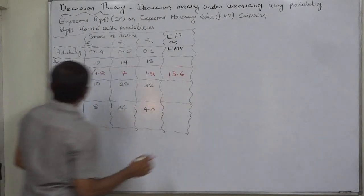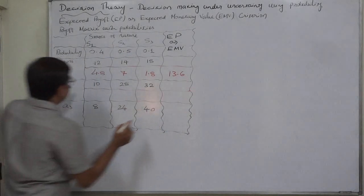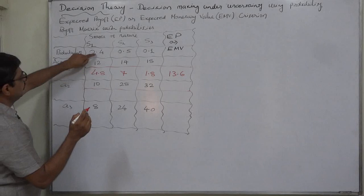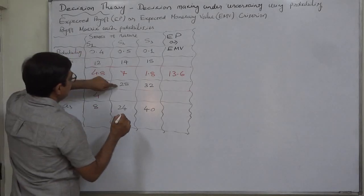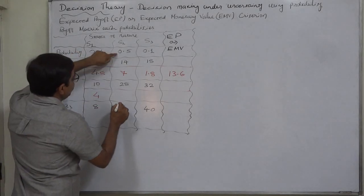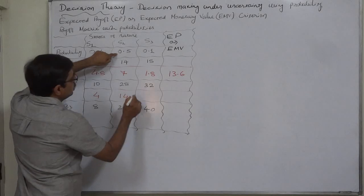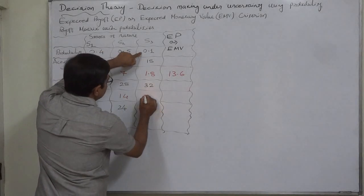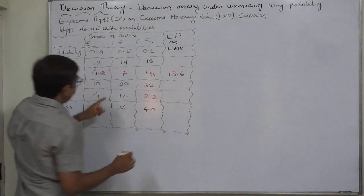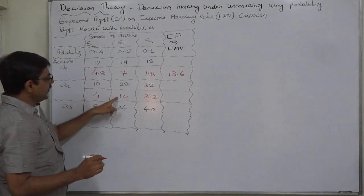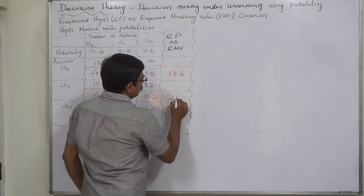For action A2: 10×0.4 = 4, 28×0.5 = 14, and 32×0.1 = 3.2. The summation is 4 + 14 + 3.2 = 21.2. So the expected payoff for A2 is 21.2.